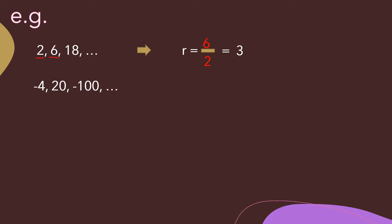For the sequence negative 4, 20, negative 100, we again use the second term divided by the first term: 20 divided by negative 4. The common ratio here is negative 5.